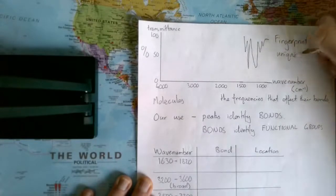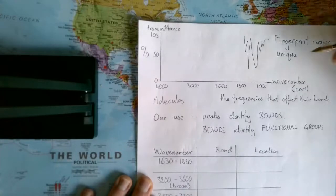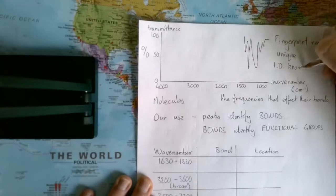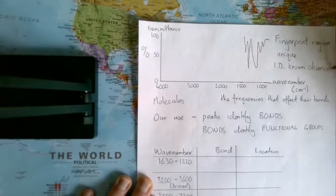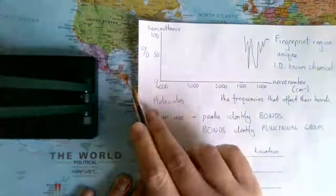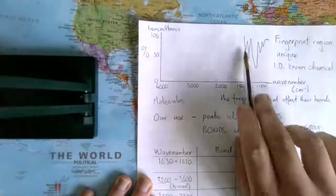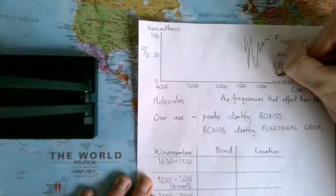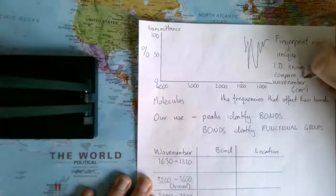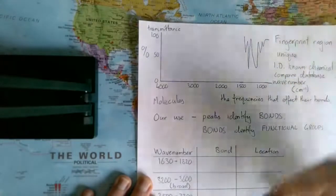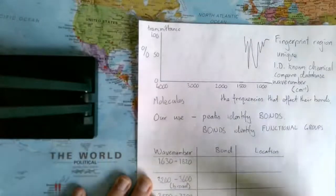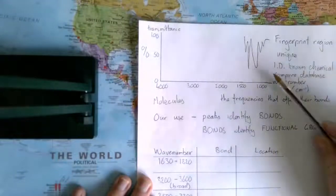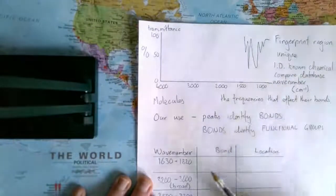Just like your fingerprints are unique to you, the fingerprint region is unique to any given molecule. So what this can be used for is to identify a known chemical. You would run the infrared spectrum, and then you'd have a computer measure the various peaks, and then you would compare it to a reference or database. So that is one of the questions you might be asked. The infrared is unique to each molecule, so you compare to a database.